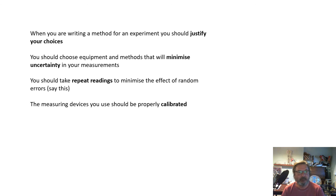Here's a summary of what I've been talking about in this video. When you're writing a method for an experiment, you should justify your choices. You should choose equipment and methods that will minimize uncertainty, for example you choose equipment with appropriate scale divisions. You should always take repeat readings to minimize the effect of random errors, and say that in your plan: I will do the experiment at each temperature three times and take an average. This will minimize the effect of random errors. And any measuring devices that you use should be properly calibrated, for example to check for zero error, so that there isn't that systematic error there.